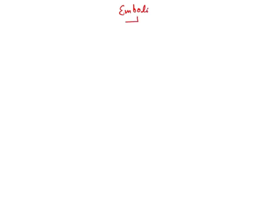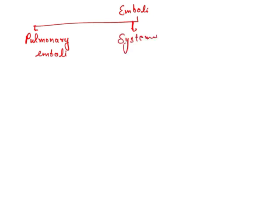Discussing types of embolism: there are pulmonary emboli, then we have systemic thromboembolism, and the last one we have to talk about is fat embolism.